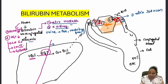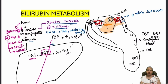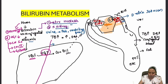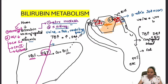In unconjugated hyperbilirubinemia, total bilirubin is high with high indirect bilirubin and low direct bilirubin. In conjugated hyperbilirubinemia, total bilirubin is again high but direct bilirubin is high and indirect bilirubin is low. Urine will show positive urobilinogen in conjugated hyperbilirubinemia because conjugated bilirubin dissolves in blood and is excreted in the kidney.